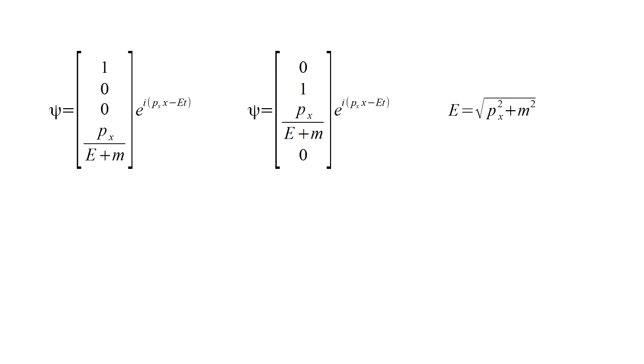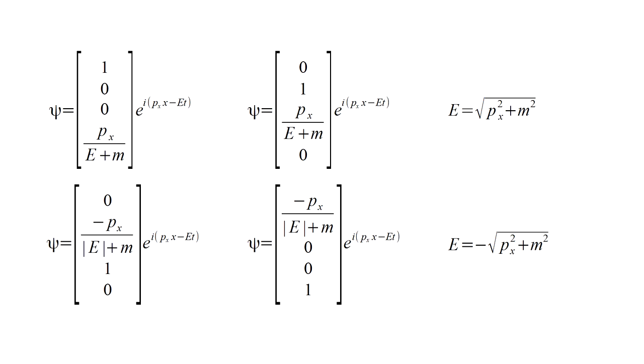We see that for positive energy electrons, it's not generally possible to be in a pure spin-up or spin-down state while moving. And, they necessarily have non-zero negative energy components in their wave functions. Here are the corresponding negative energy solutions. They contain non-zero positive energy components and also cannot be pure spin-up or spin-down states.